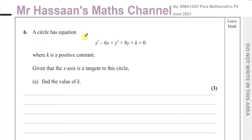This question is about a circle which has equation x squared minus 6x plus y squared plus 8y plus k equals 0, where k is a positive constant. Given that the x-axis is a tangent to this circle, find the value of k.